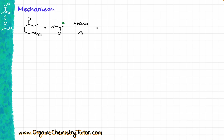The very first thing that's going to happen is that my base, sodium ethoxide, is going to go after the most acidic proton. In our case, the most acidic proton is the one between the carbonyls. The pKa of the position in between the carbonyls is somewhere around 9, so sodium ethoxide will deprotonate it without any problems. My ethoxide comes in, pulls that proton off, giving me the corresponding enolate.